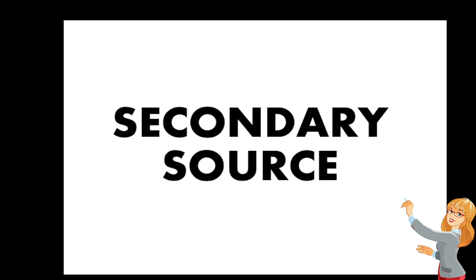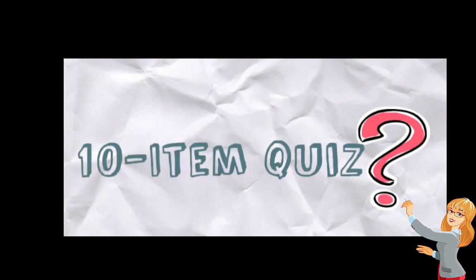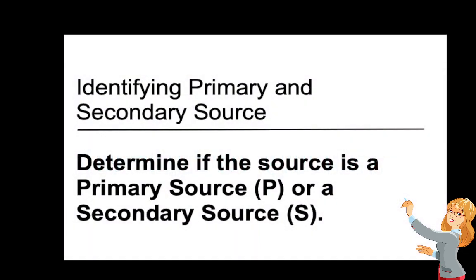As promised, we now have a 10-item quiz to assess our understanding about primary and secondary sources. Just write 'primary source' or 'P,' or 'secondary source' or 'S.' I'll give you 5 seconds for every item. Let's start. Number 1 item — you have 5 seconds.